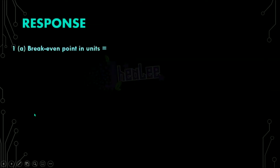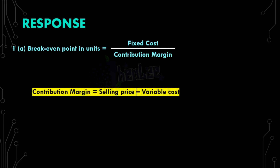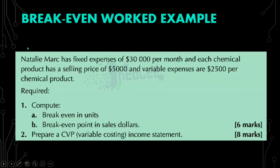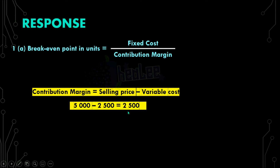To calculate break-even in units, remember your formula is fixed cost divided by contribution margin. To calculate contribution margin, that is selling price minus variable cost. Going back to our question, the selling price is $5,000 and the variable cost is $2,500. So the contribution margin is $5,000 minus $2,500, which gives us a contribution margin of $2,500.